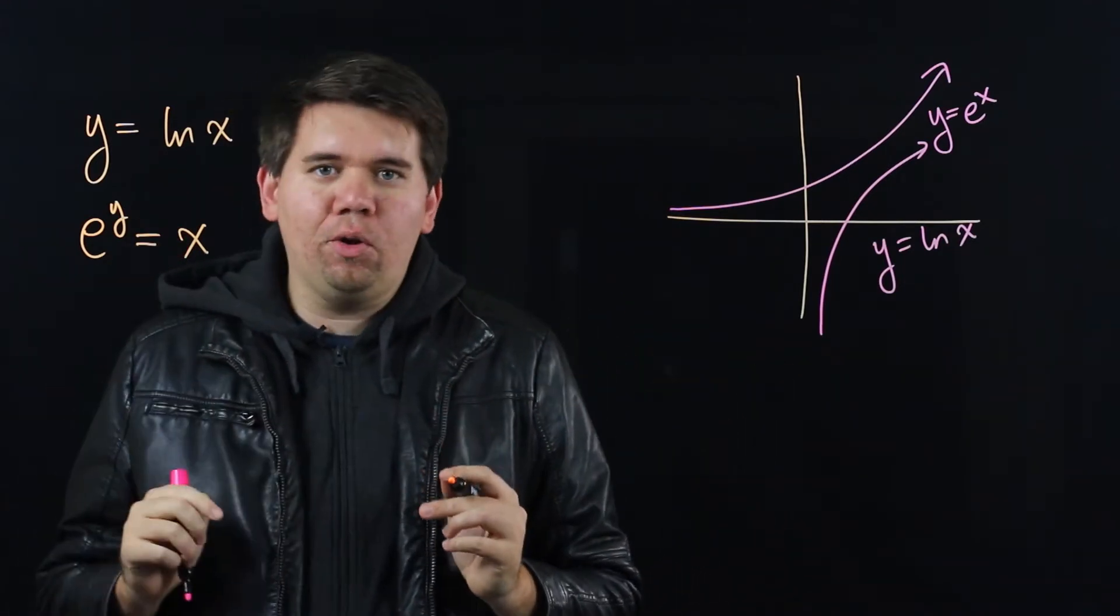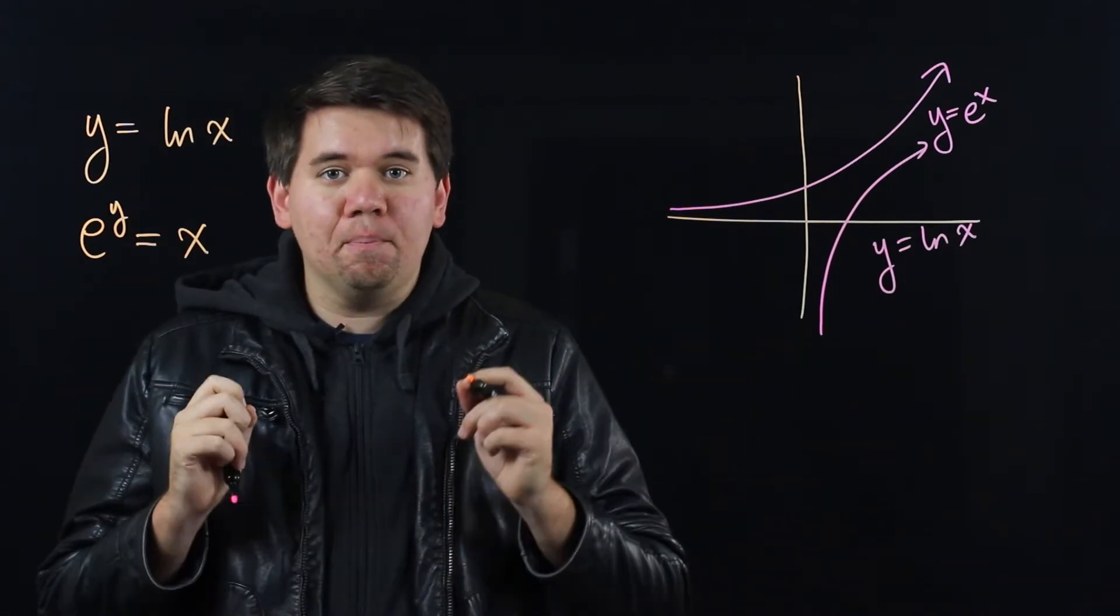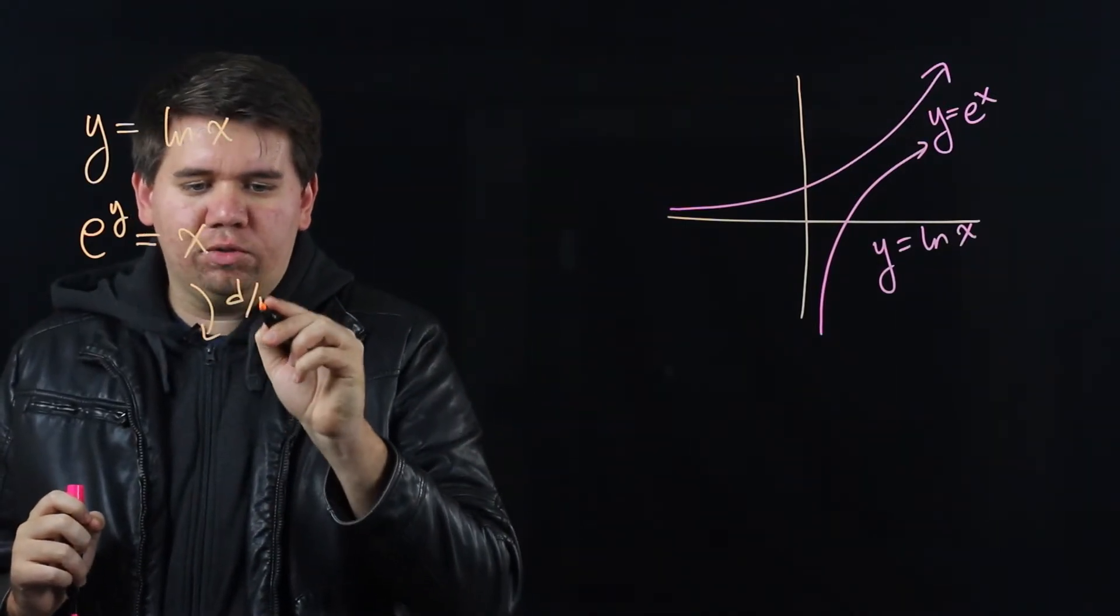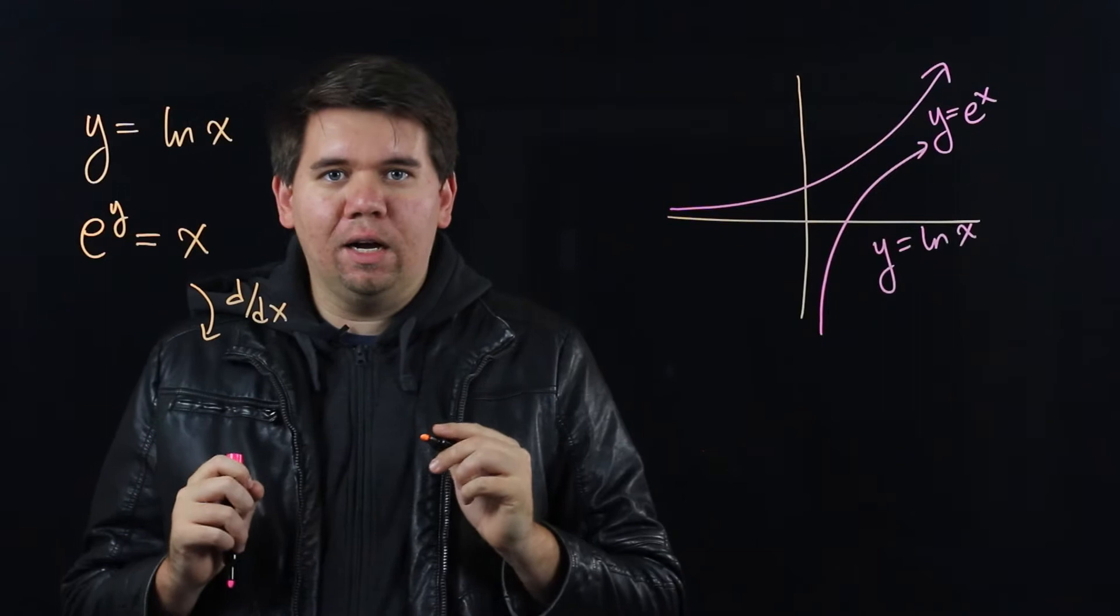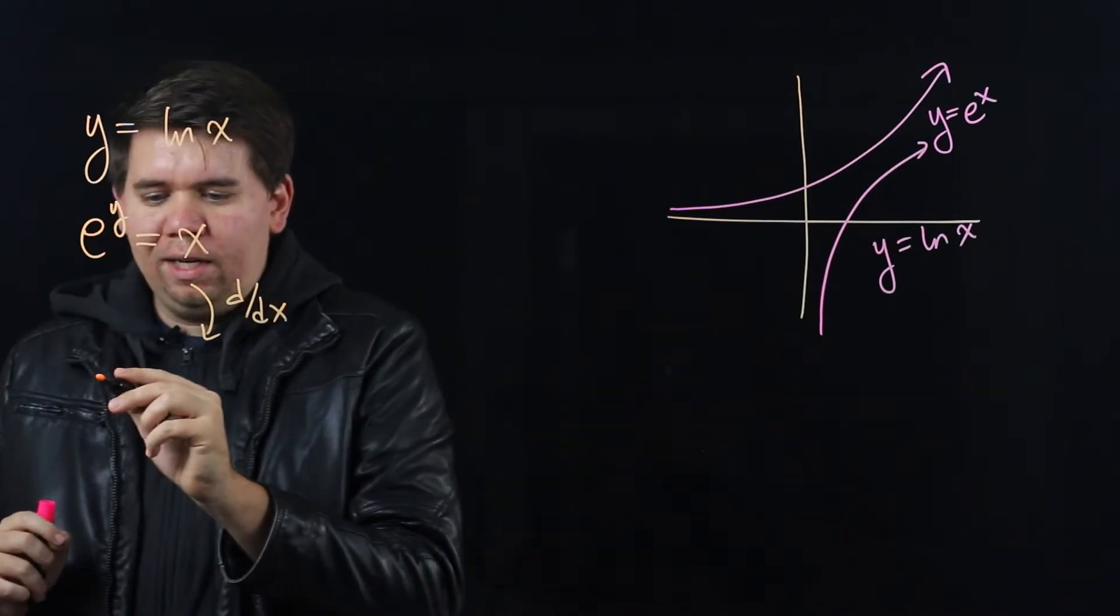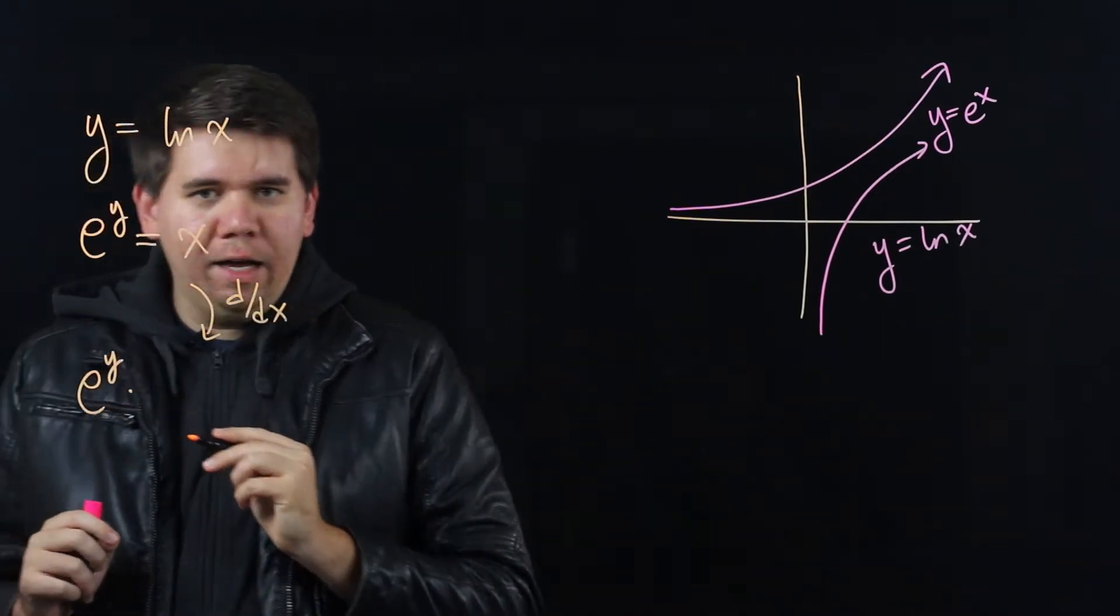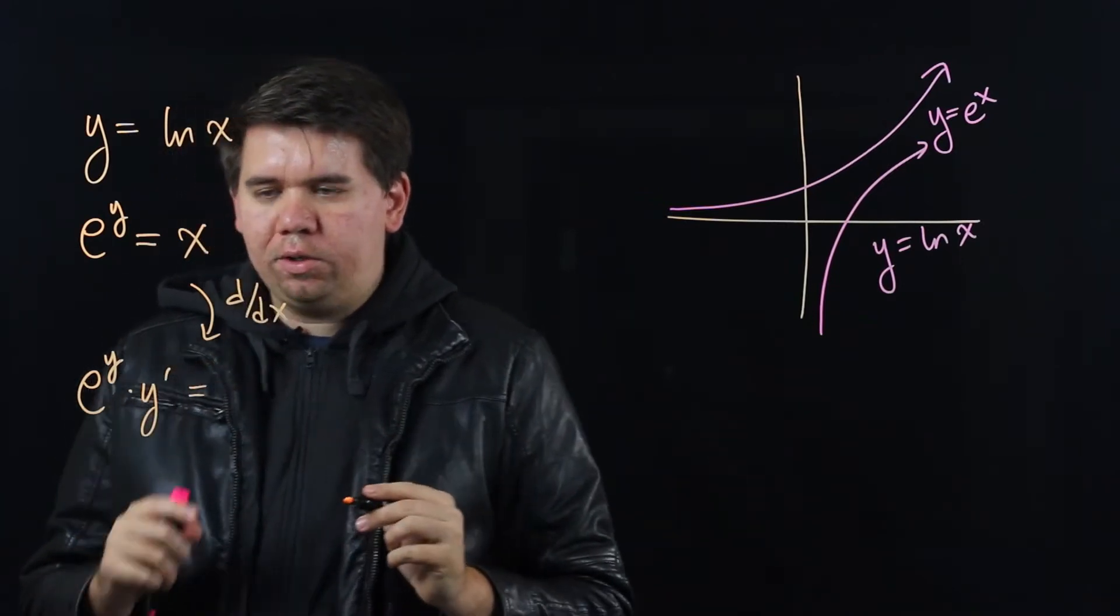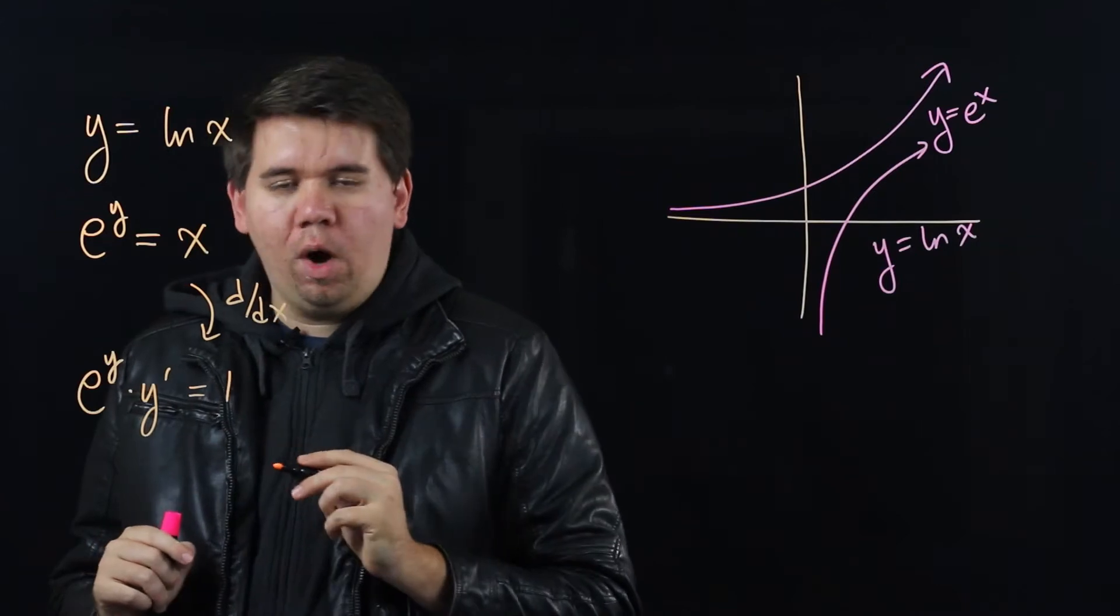Since the y is no longer isolated, we're using implicit differentiation. So go ahead, calculate the derivative with respect to x of both sides. On the left-hand side, you get e to the y times, by the chain rule, y prime is equal to, on the right-hand side, 1.